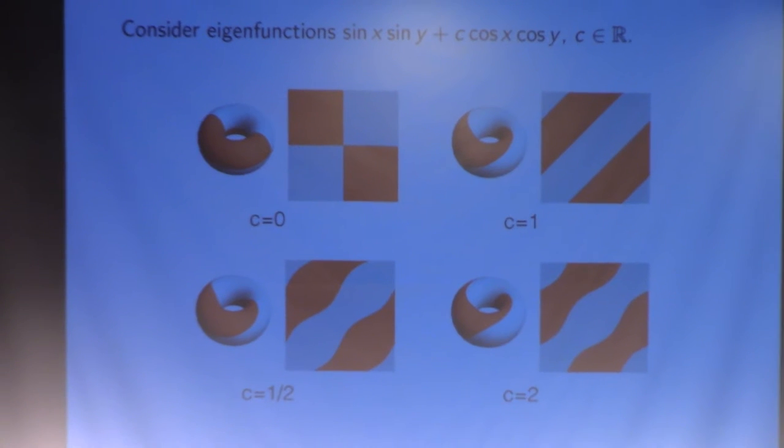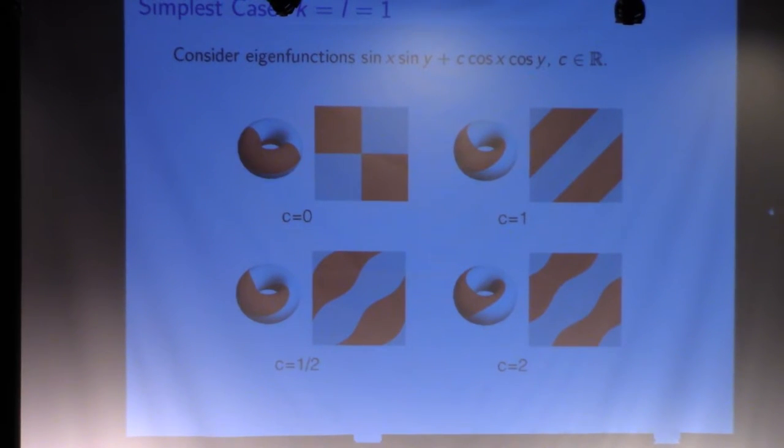If we consider k equals l equals one, we have these eigenfunctions. Fix one of the coefficients, change the other one. We have four different cases. In the first one, which is the checkerboard case, we have four nodal domains. And in the other three cases, which are just diagonal stripes, we have two nodal domains.